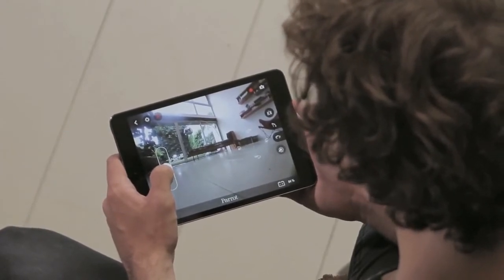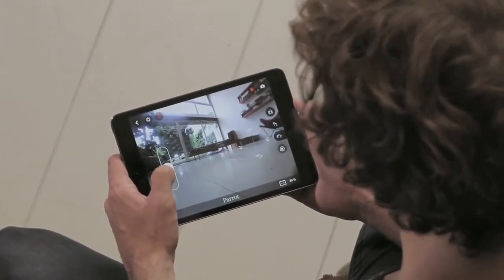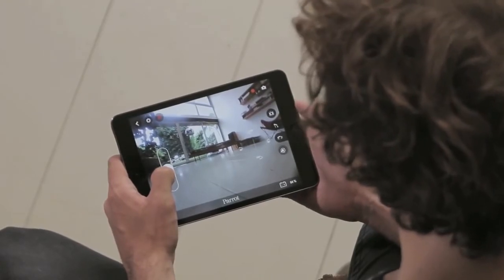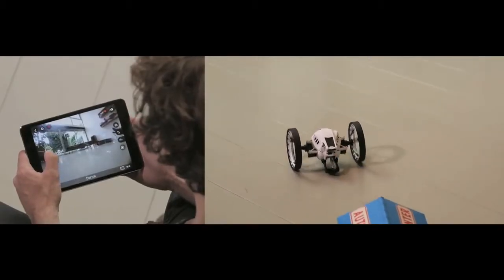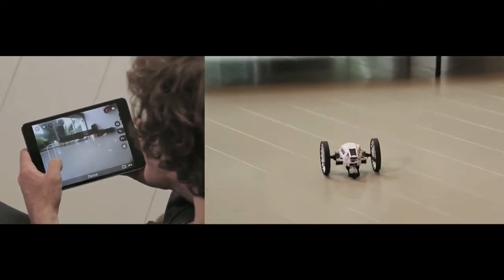Jumping Sumo is very easy to pilot. To go forward or backward, just slide your thumb on the left joystick. Forward and backward.